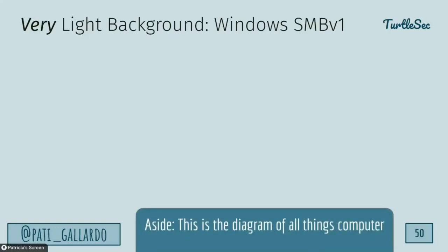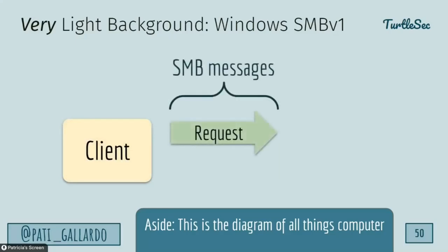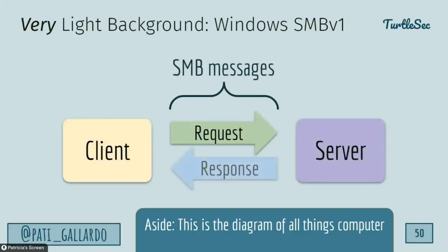A client sends some kind of request to a server and gets a response. Since the request can go over several messages, the state for the request is stored on the server heap. This makes it possible to control the length of the allocation, when it gets allocated, when it gets deallocated — maybe when you close the connection. You can also control the content. The vulnerabilities were based on the server handling messages incorrectly.